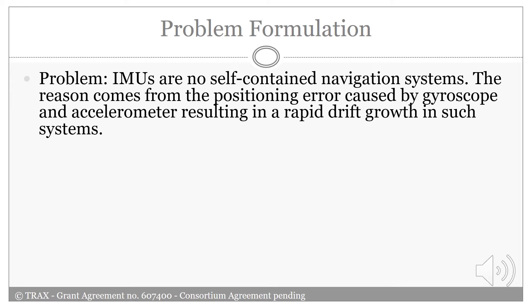However, these systems are not self-contained navigation systems. The reason comes from the positioning error caused by gyroscope and accelerometer resulting in a rapid drift growth in such systems.